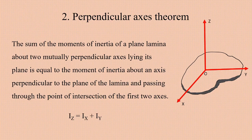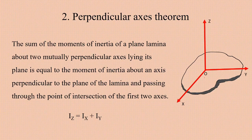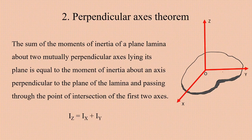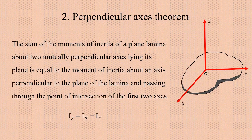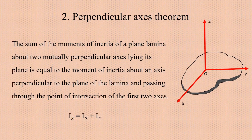Here we have two axes, OX and OY, which are the two mutually perpendicular axes lying in the plane lamina. The perpendicular axis theorem states that the sum of the moment of inertia about OX and OY is equal to the moment of inertia about OZ, which is perpendicular to the plane lamina and passing through the point of intersection O. So we can express: Iz = Ix + Iy.